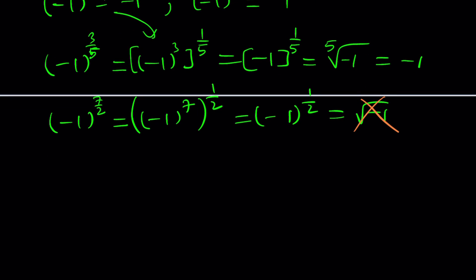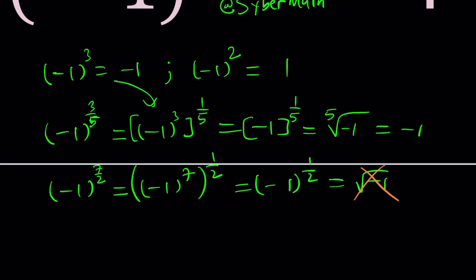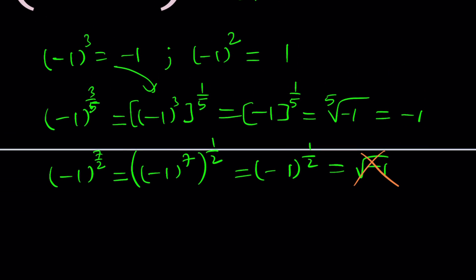Now what happens if you have something like negative one to the power six over two? Again this is problematic because six over two is not simplified. Obviously that's going to be three, but you get the idea. Let's not go into the details. So that's what happens with negative one in the real world.